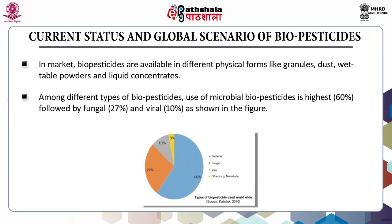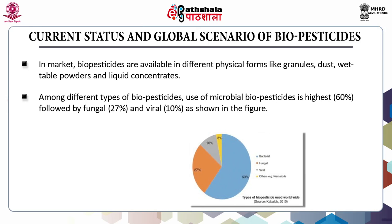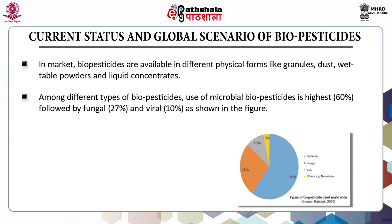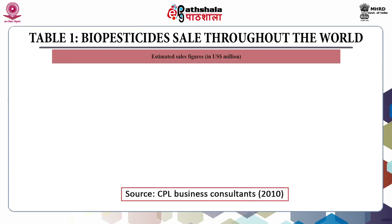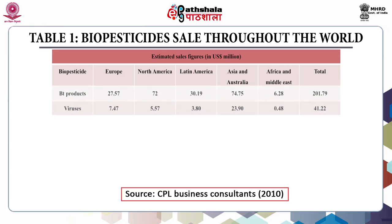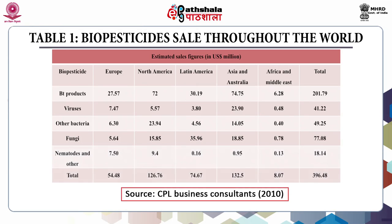Among different types of biopesticides, the use of microbial biopesticides is highest at 60%, followed by fungal at 27% and viral at 10%. Coming to biopesticide sales throughout the world: the sale of Bt products is US$ 201.79 million; virus products US$ 41.22 million; bacteria US$ 49.25 million; fungi US$ 77.08 million; and nematodes and others US$ 18.14 million.